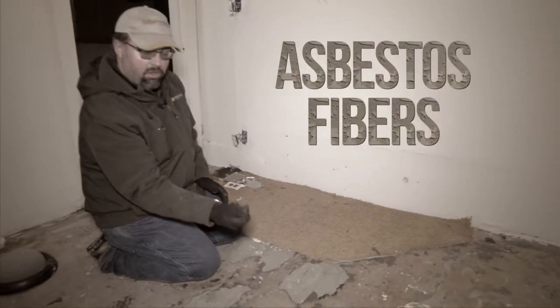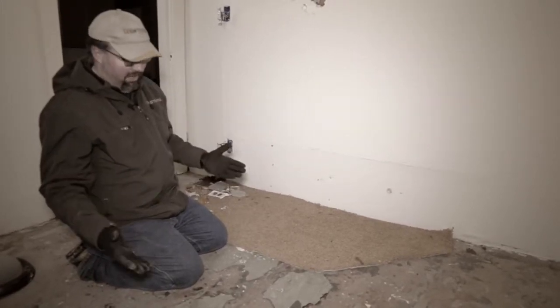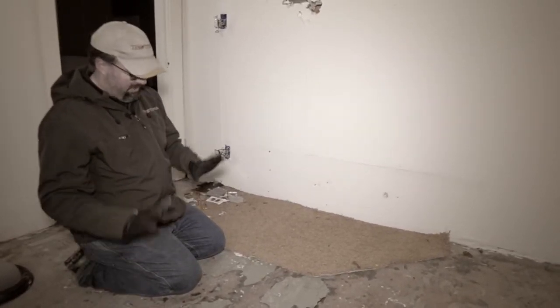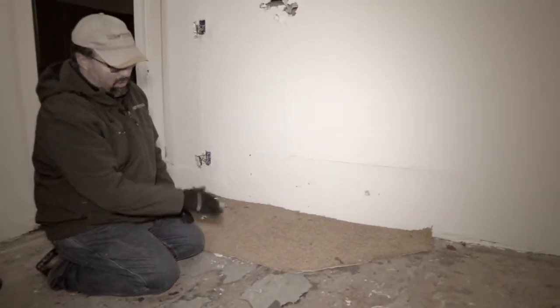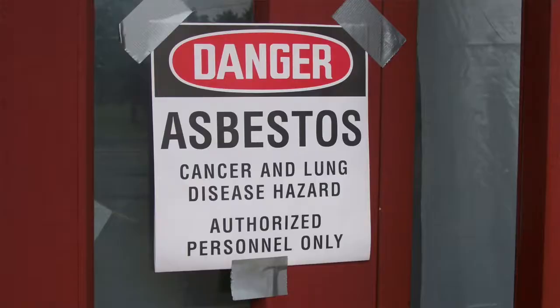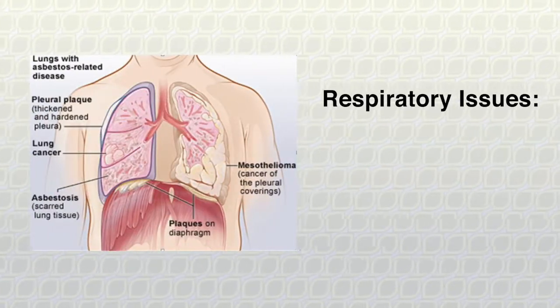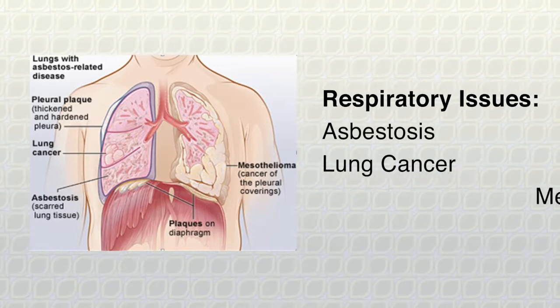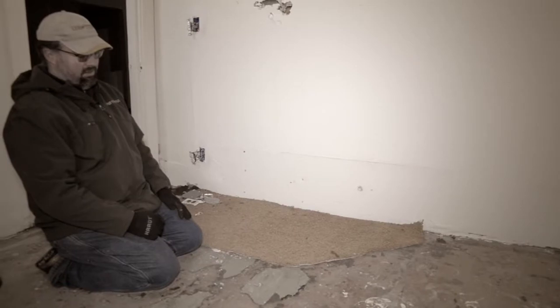With asbestos, we worry about what's called friability. If something is friable, you can take it in your hand and crumble it to dust, and then that dust can get into the air and you have an issue — you're breathing in asbestos fibers. In this case, this is not friable. But once we start cutting this floor out to do our renovation, you're going to make dust. It's a dangerous material. It has physical properties that cause respiratory issues, including asbestosis and some forms of lung cancer. One of the most well-known is mesothelioma. These are all caused by asbestos fibers in the air.